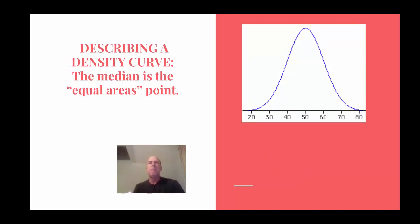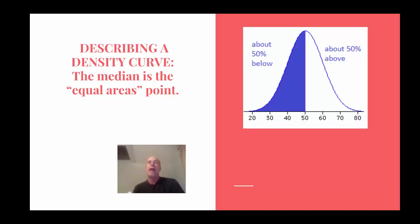Next, we want to talk about mean and median. We want to describe density curves by looking at their center. Well, if we think about median, median is the 50th percentile. It's the place in the distribution where 50% of the observations are below and 50% of the observations are above. So the median is really the equal areas point. So here's a nice bell-shaped distribution here. Where would the median lie? Well, if you think about the equal areas point, it's simply right here at 50. About 50% of the scores would be below 50 and about 50% above.